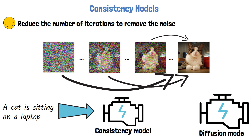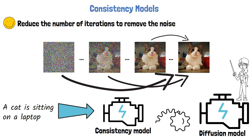Consistency models as originally invented were trained by distilling information from a large pre-trained diffusion model — which serves as a teacher — into the consistency model, which has its own weights.